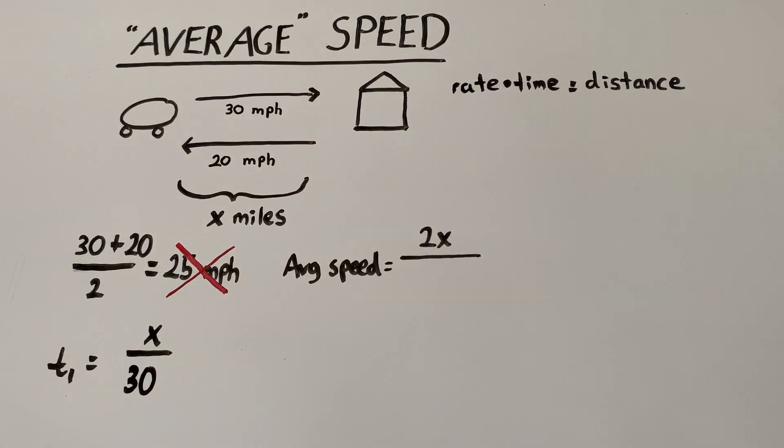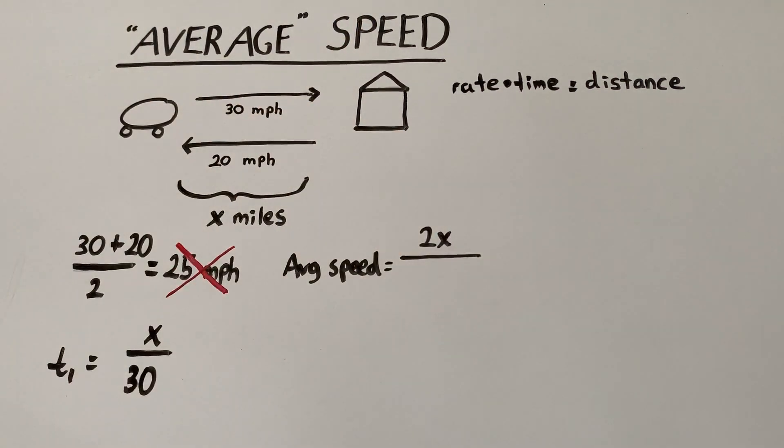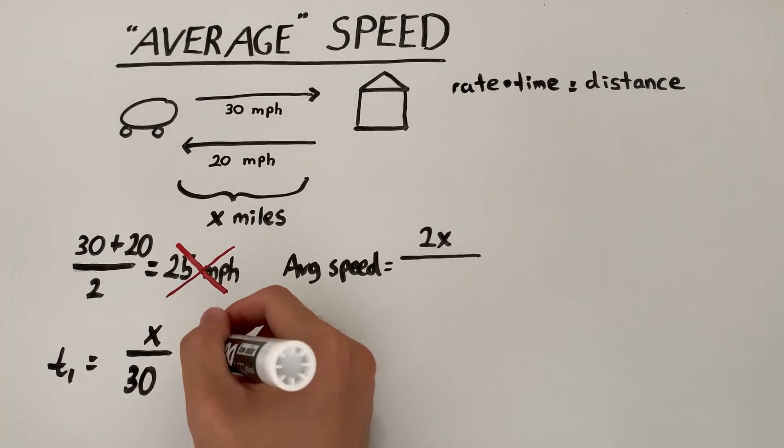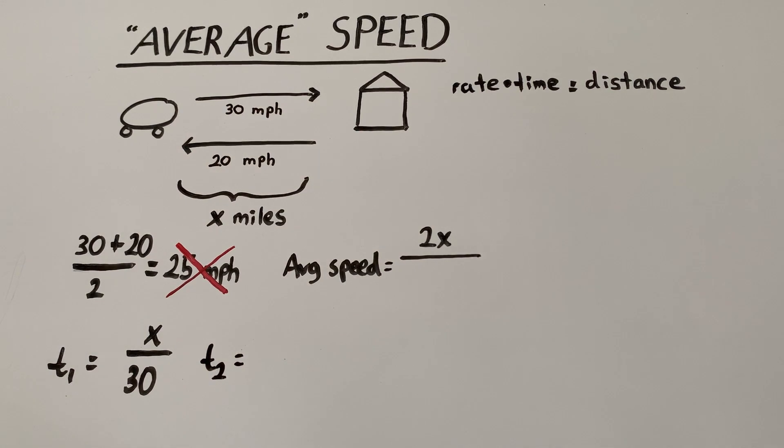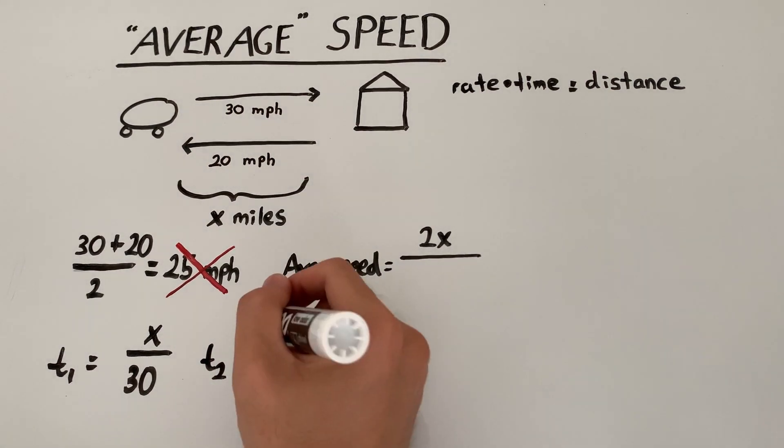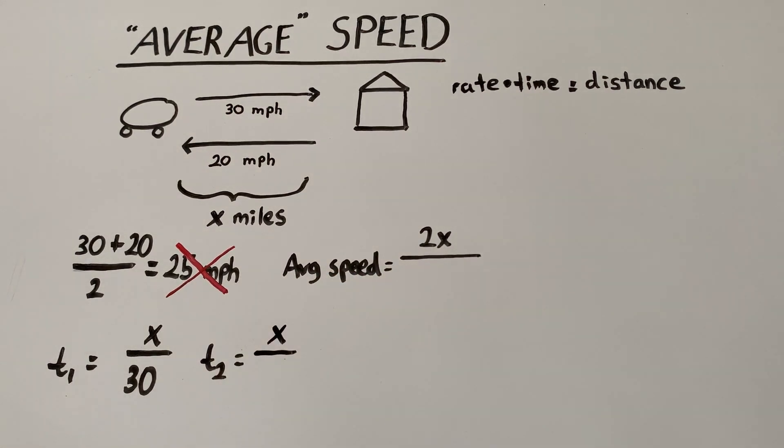Similarly, let's call T2 the time it takes from grandma's place to my place. And that would be the distance, which is still x, divided by the rate. This time, it's 20.